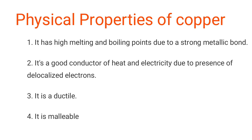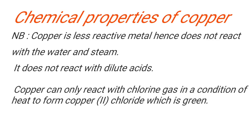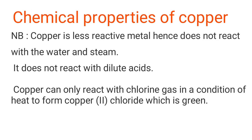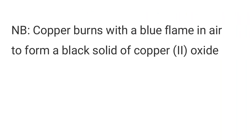Physical properties of copper: it has a high melting and boiling point due to strong metallic bonds; it is a good conductor of heat and electricity due to the presence of delocalized electrons; it is ductile; and it is malleable. Chemical properties: copper is less reactive, so it does not react with water or steam, and does not react with dilute acids. However, copper reacts with chlorine gas under heat conditions to form copper two chloride, which is green. Copper also burns with a blue flame in air to form a black solid of copper two oxide.